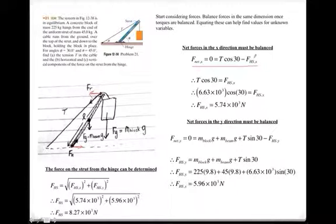And so, the force of the hinge on the strut from the hinge is going to be, in the X component, equal to T cos 30. So, we rearrange it, and we know that in equilibrium, the net forces in the X dimension must be equal to zero. And so, as a result, we end up finding that the force on the strut from the hinge is going to be equal to 5.74 times 10 to 3 newtons.